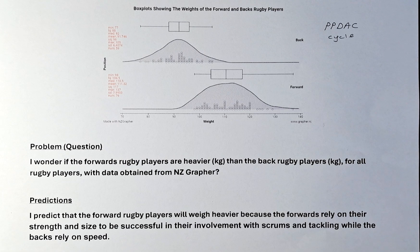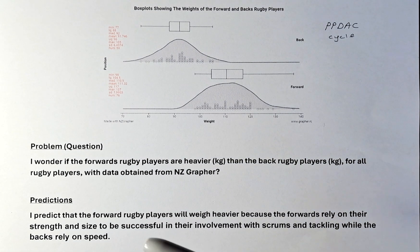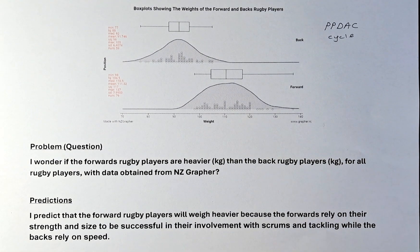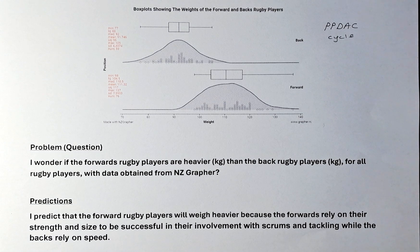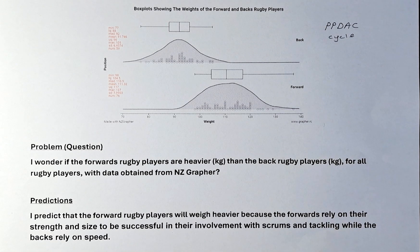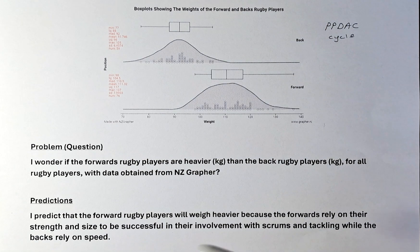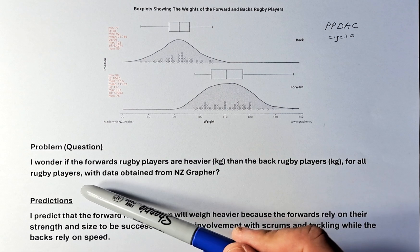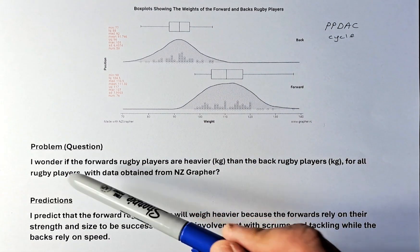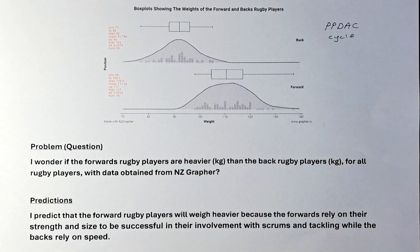Once you have written the question, you need to have one category bigger than the other. If you say "what is the difference," you will be marked wrong. The question must state that one is bigger or smaller than the other category. You must also write the population — the population is all rugby players with data obtained from whichever source you get it from.